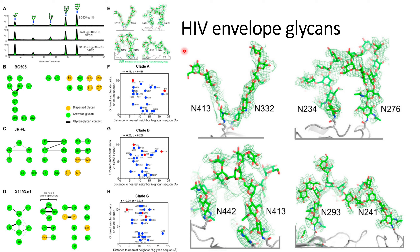In this video we will cover the envelope proteins of the HIV virus that prevent it from immune response with the help of this glycan shielding, so that the immune proteins will not be able to detect this HIV virus and generate antibodies against it.